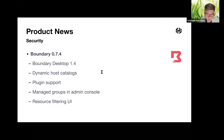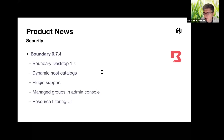This version also implements initial support for partner plugins via the Go plugin module. Managed groups are now automatically populated using an administrator-defined filter, and users can filter hosts, host methods, and session resources in both the admin console and the Boundary desktop application.